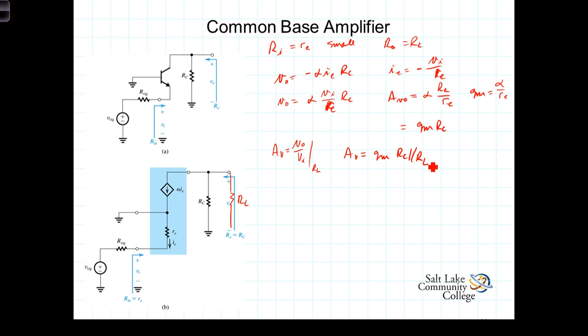Now we can calculate the overall voltage gain by saying that G-sub-V equals A-sub-V times the voltage division term at the input. G-sub-V is A-sub-V, which is V-out over V-in, times V-in over V-sig, where V-in equals V-sig times R-sub-E over R-sub-E plus R-sig. So G-sub-V equals G-sub-M R-sub-C parallel R-sub-L times R-sub-E over R-sub-E plus R-sig.